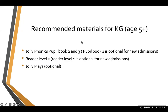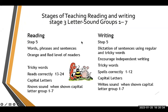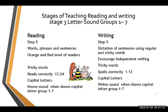After covering all seven groups, children are now at Step 5. Before moving to Pupil Book 2, they should read lots of words, phrases, and sentences at orange and red reader levels, know Tricky Words 1 through 24, understand capital letters with no sound when shown capital letters, and complete dictation of sentences, tricky words, and independent writing.